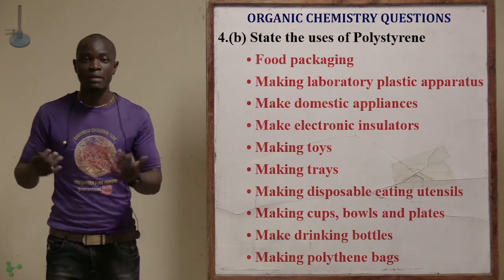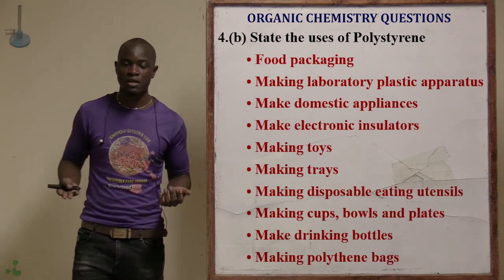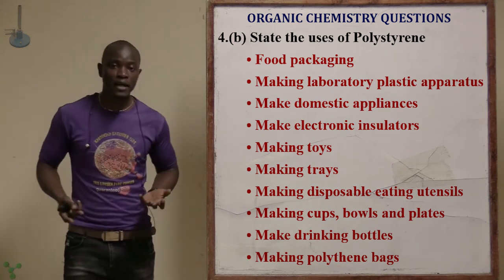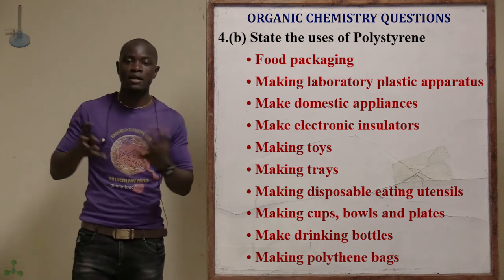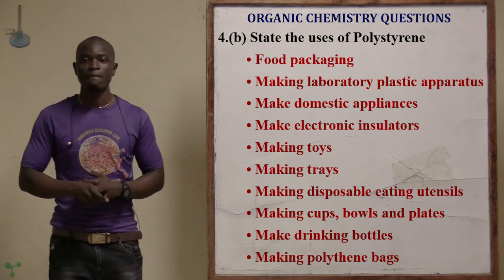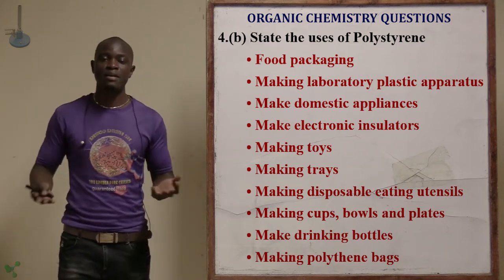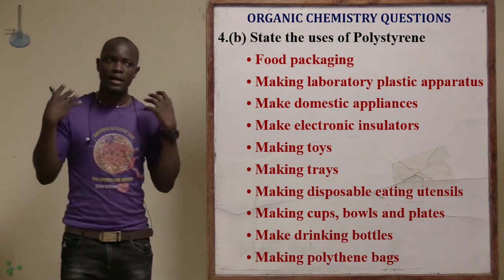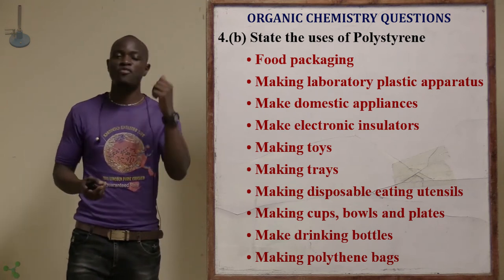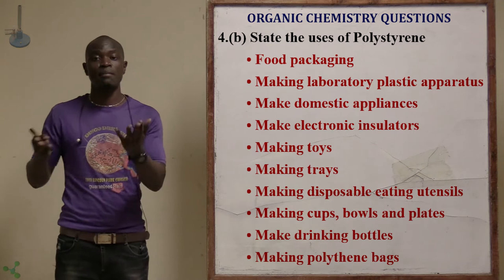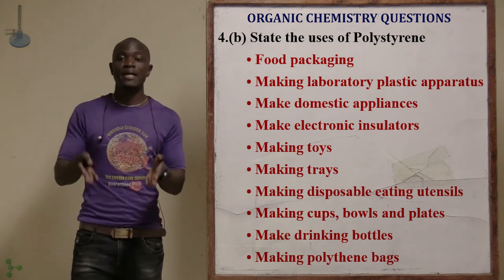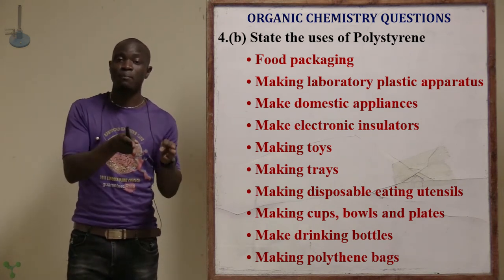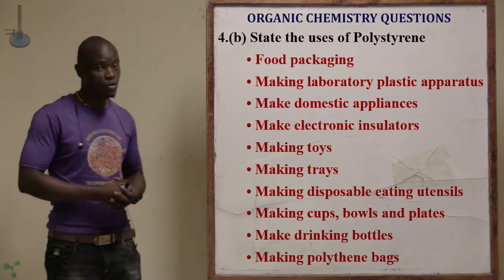Polystyrene is used in making plastics, cups, and plastic substances. It is used in food packaging, making toys, trays, disposable plates, disposable utensils such as forks and knives, and plastic laboratory equipment. Basically, anything plastic — polystyrene fits. Polystyrene is used in making most of the plastic substances we see around us.